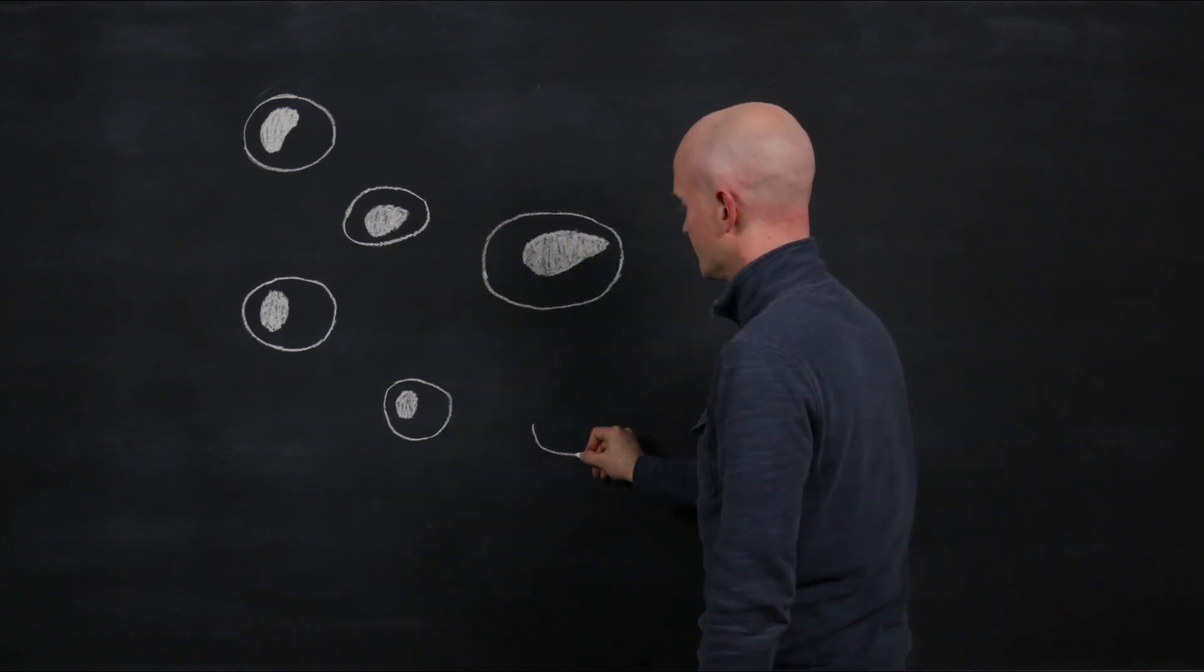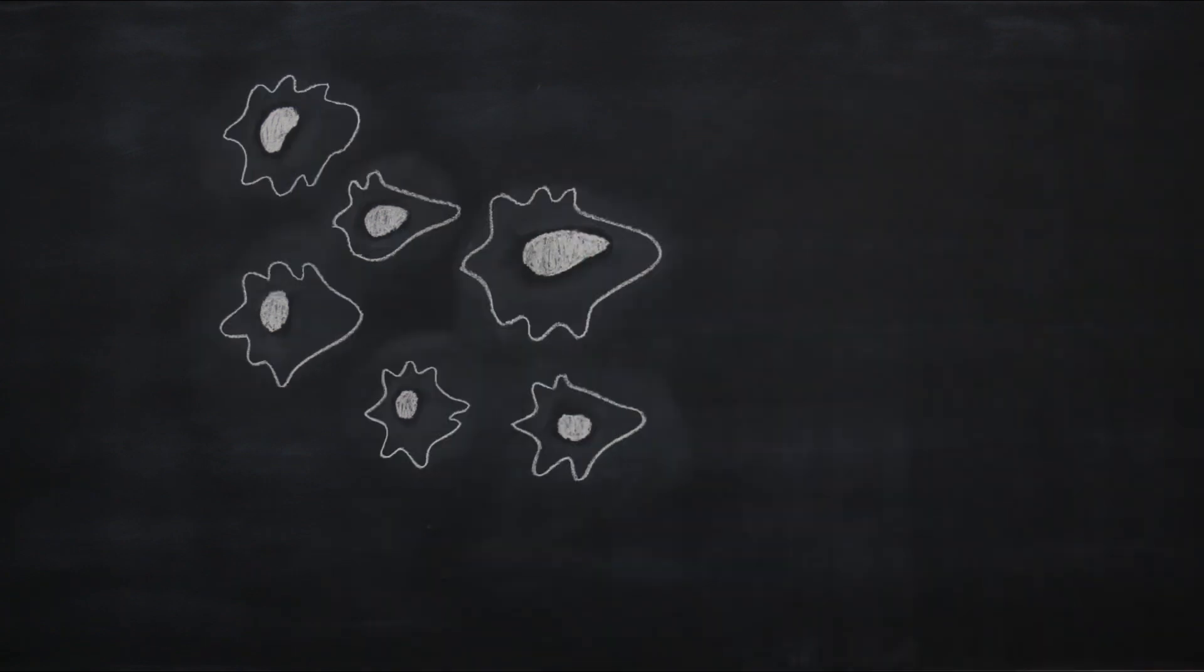We want to know how neurons communicate with one another, so we start by looking at how communication occurs within a single neuron.